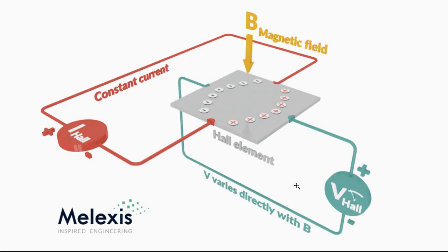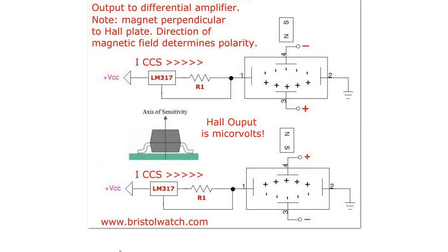This Hall voltage will be amplified, and that is how we end up with a ratiometric Hall sensor. It has one of these plates, a high gain differential amplifier, and maybe a little power supply regulation.